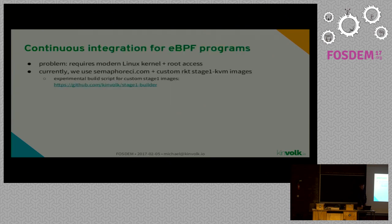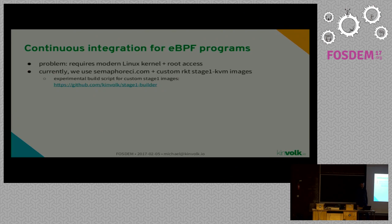One last point: continuous integration is also tricky — you need root access and a modern kernel, which you often don't have. So if you ever need to test Linux kernel features, have a look at the Stage 1 Builder project. We use Rocket with a custom Stage 1 image which allows us to test any workloads on CI systems.